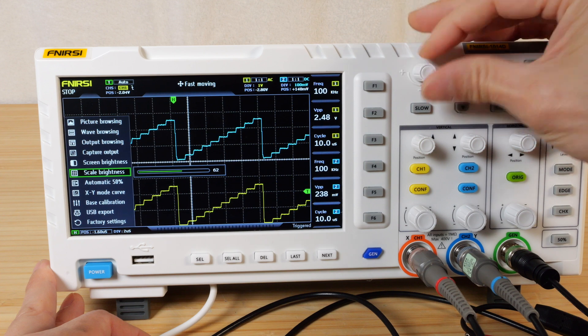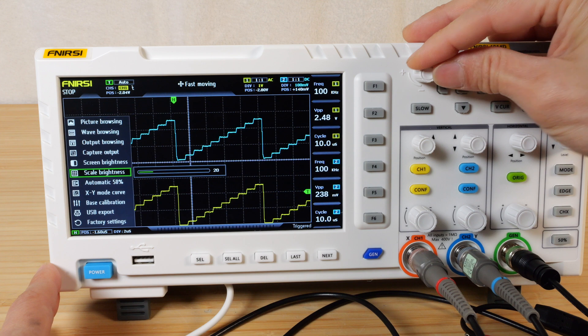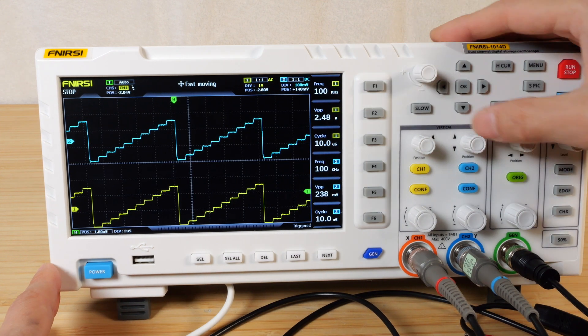Scale brightness. Let's say 50%. It reduces the brightness. I don't want it that bright. I like it like that more.